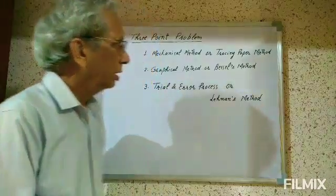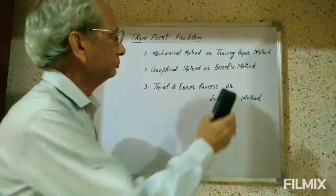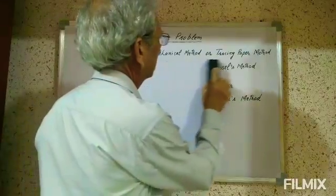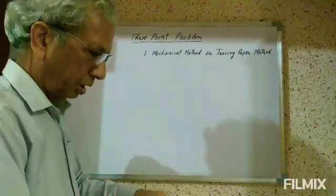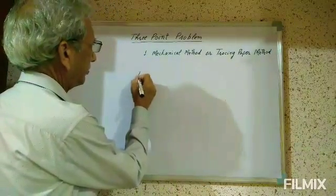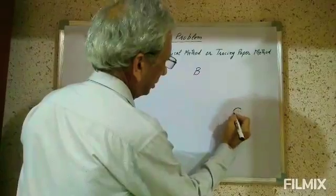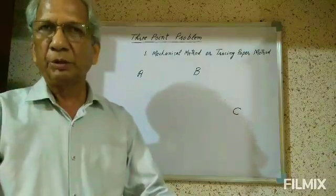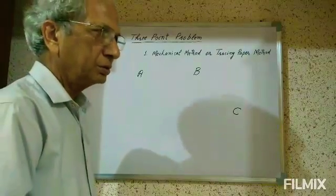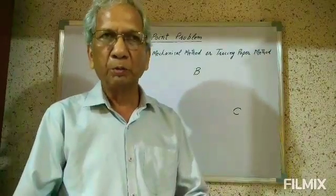I will now explain how this mechanical method is applied in the field. Suppose we have three points A, B, and C. In the field there may be four or five points — more than three — and we can still apply the three-point problem. If there are fewer than three points in the field, we cannot apply the three-point problem; in that case, if only two points are there, we will apply the two-point problem.